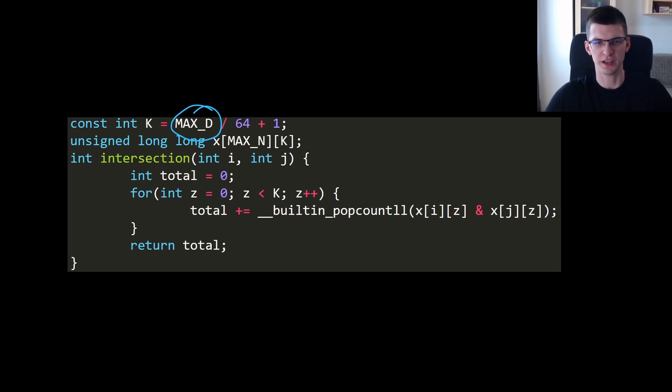We can do the same for unsigned long longs and in general the code will look like this. Let maxd be the number of days, then the number of unsigned long longs I need each with 64 bits is maxd divided by 64 plus 1 to round it up. And I create a big array, two-dimensional array for each of n workers. I want k unsigned long longs. This way for each worker I remember all maxd bits.